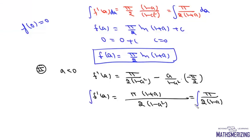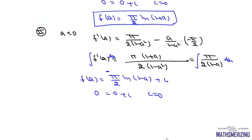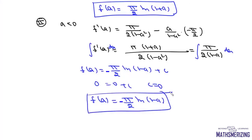We integrate this with respect to a: f(a) = (π/2)log(1−a) + C. Again applying the initial condition f(0) = 0, we get 0 = 0 + C, so C = 0. Therefore, the value of this integral is (π/2)log(1+a) when a ≥ 0, and (π/2)log(1−a) when a < 0. This completes the proof for both cases.